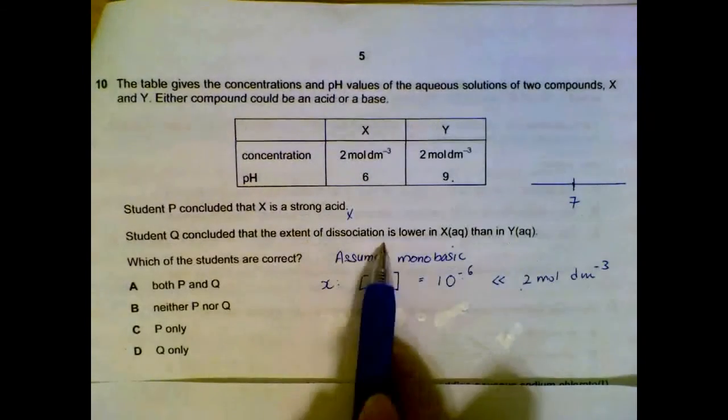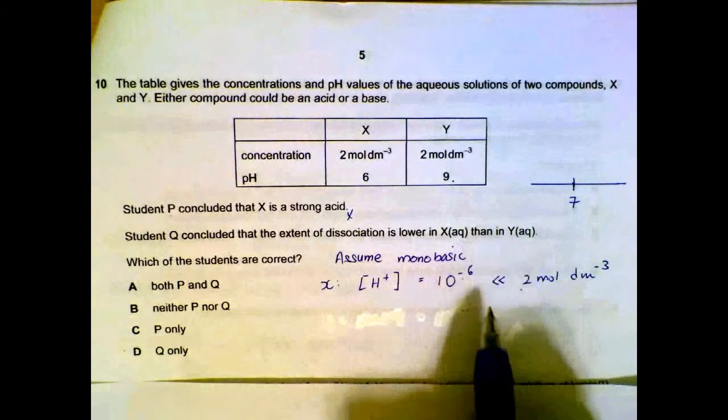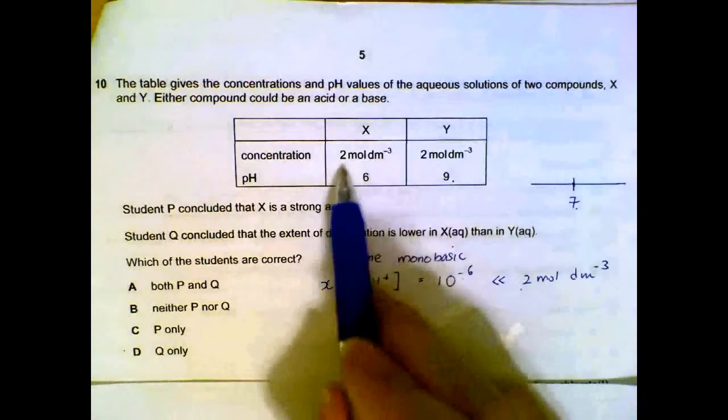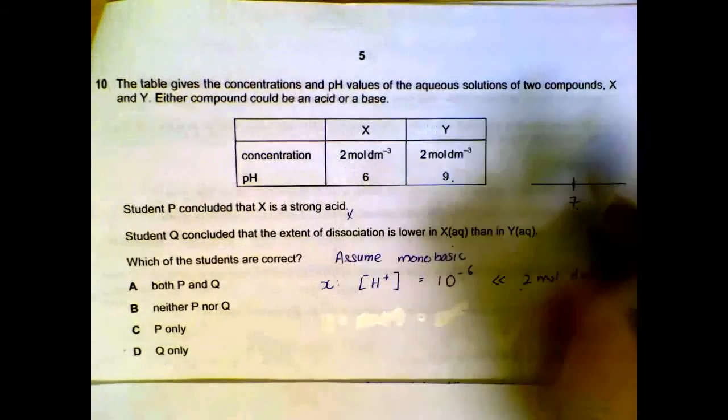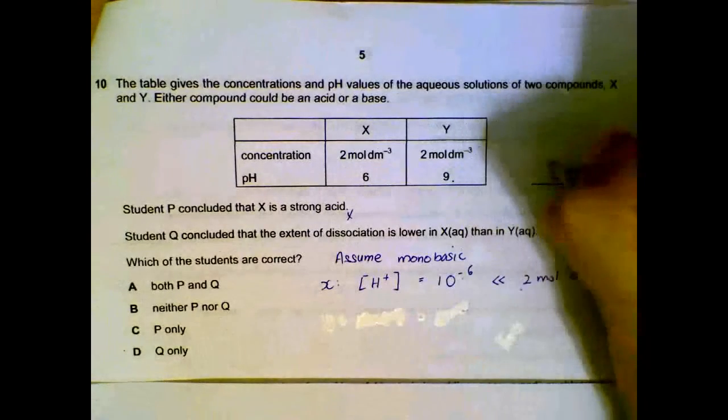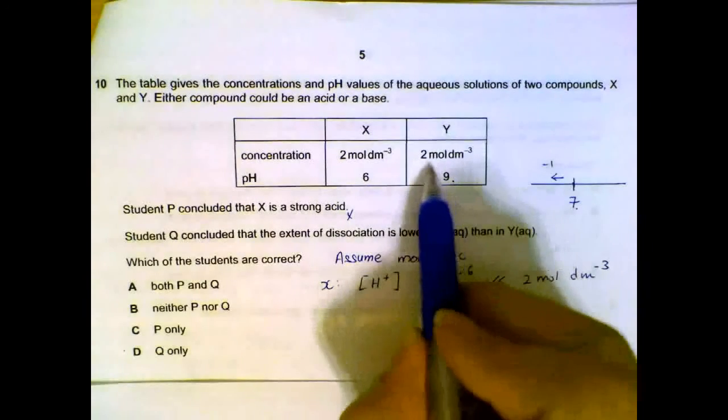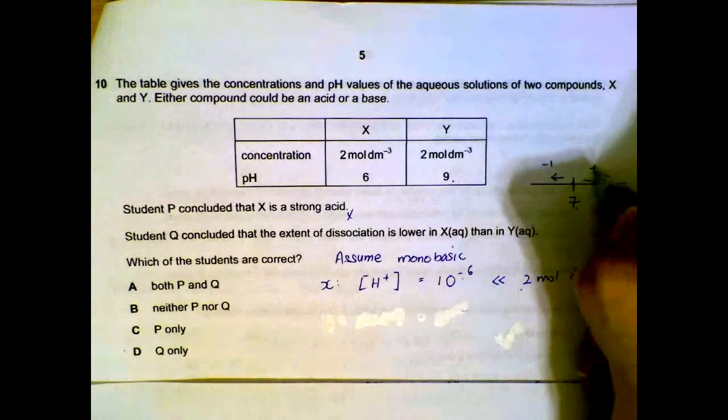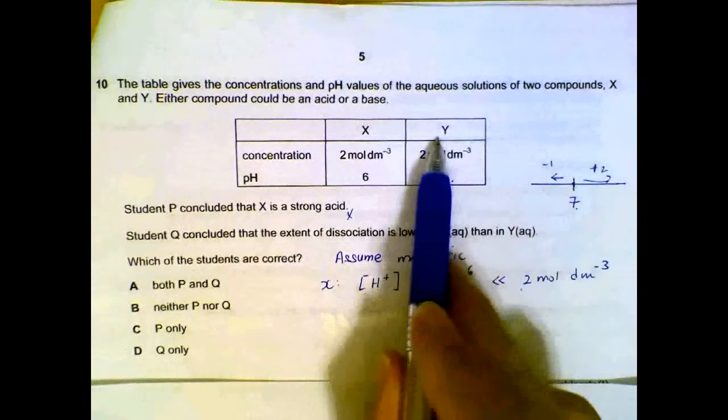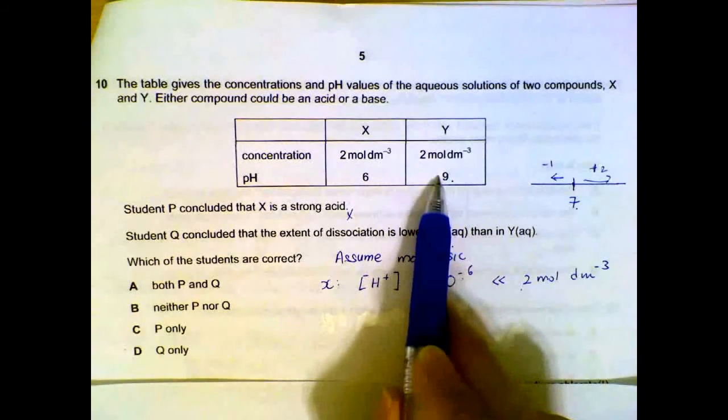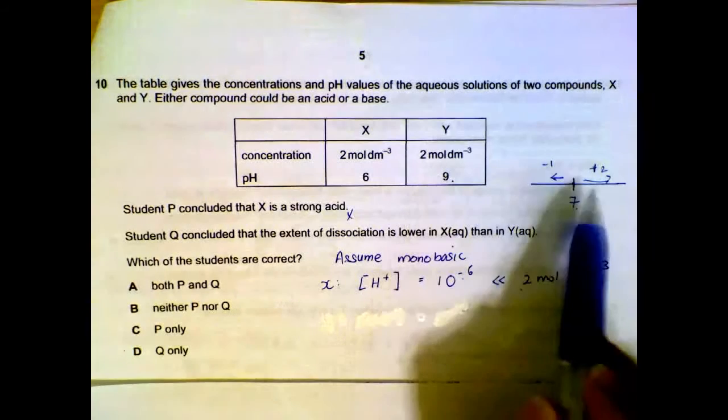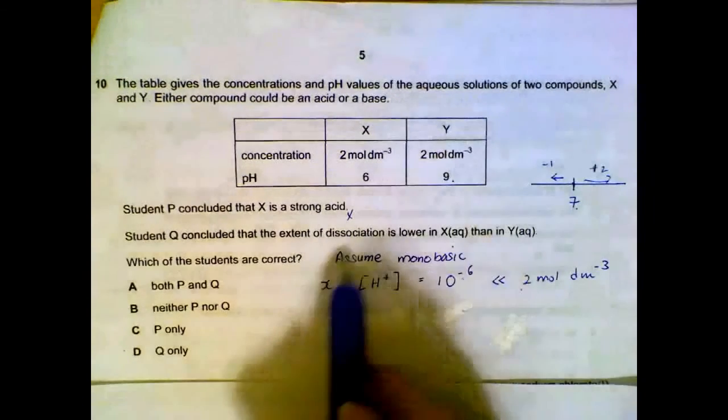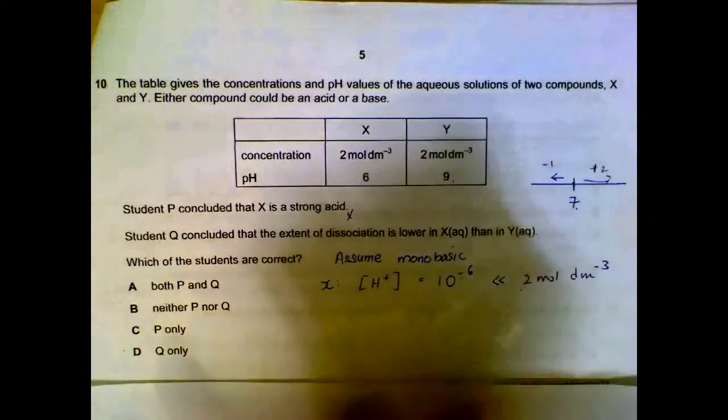Q: extent of dissociation is lower in X than Y. Instead of doing calculations, we can do a bit of reasoning. Starting from neutral, adding 2 moles per dm³ of X it decreases the pH by 1 unit, whereas adding 2 moles per dm³ of Y increases the pH by 2 units. So we can actually reason out that Y dissolves more in water because it affects the pH to a greater extent given the same concentration. So Y will dissociate more than X. So Q is actually correct.